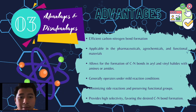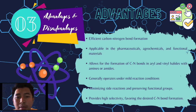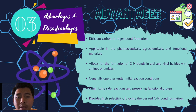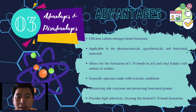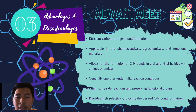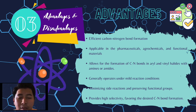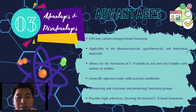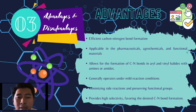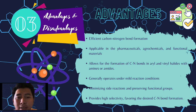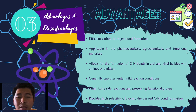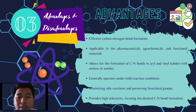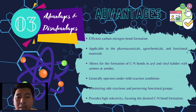The advantages of the Buchwald-Hartwig reaction include efficient carbon-nitrogen bond formation, applicability in pharmaceuticals, agrochemicals, and functional materials, and it allows for the formation of C-N bonds in aryl and vinyl halides with amines or amides. It generally operates under mild reaction conditions, minimizing side reactions and preserving functional groups, and provides high selectivity favoring the desired C-N bond formation.